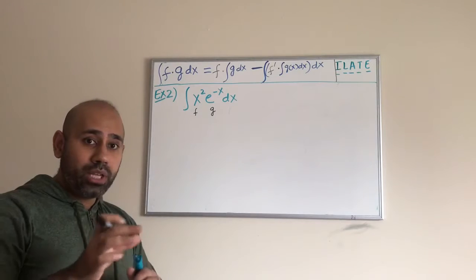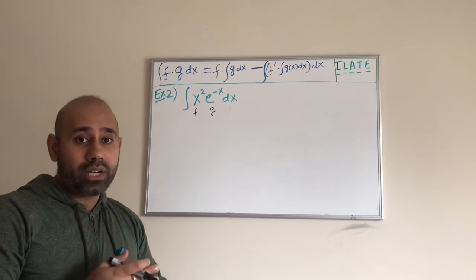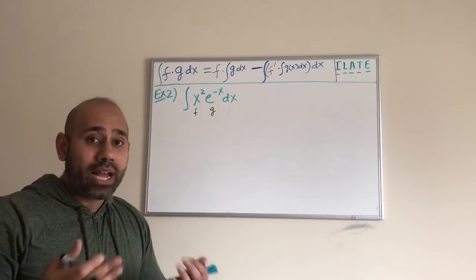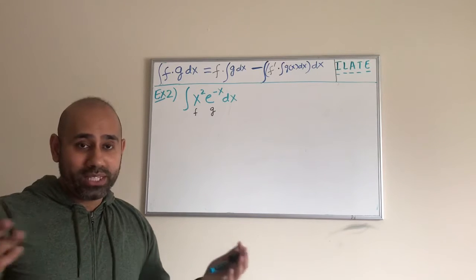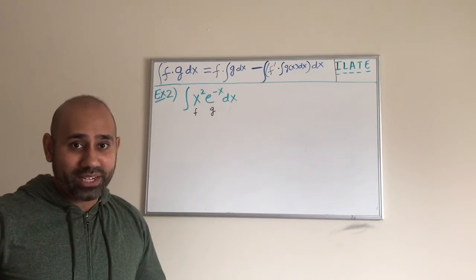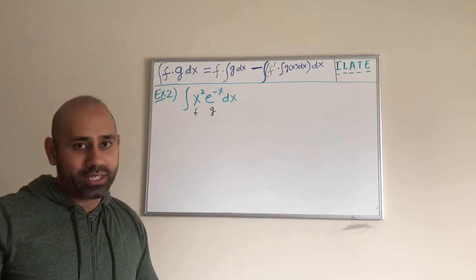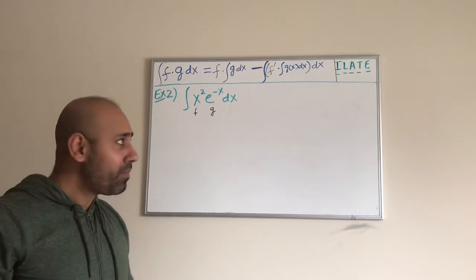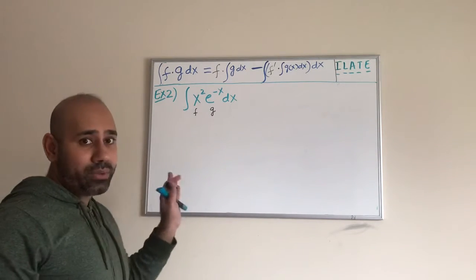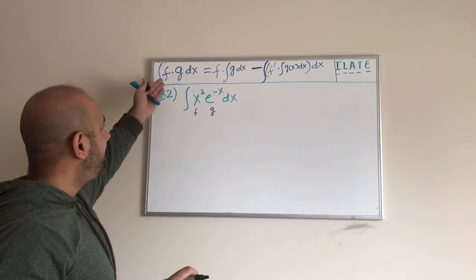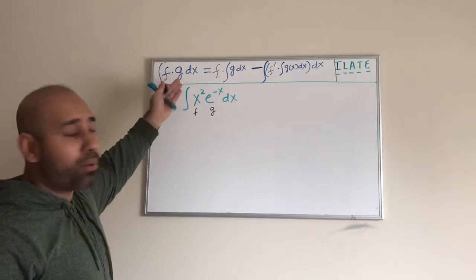If you try to do it the other way around, you can try and see what happens — you may not be able to figure out the integral, or you may have to do many extra steps. So we want to start with this as our f and g, and now let us use the integration by parts formula.